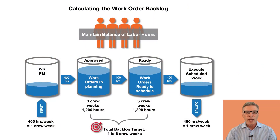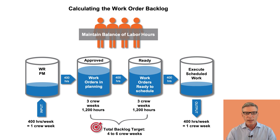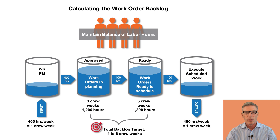If you have 1,200 hours to be planned and in planning, and another 1,200 hours of work ready to be scheduled or planning completed, that adds up to 2,400 hours. If you divide that by 400, you get six crew weeks of total backlog.